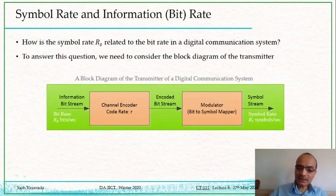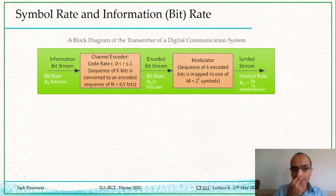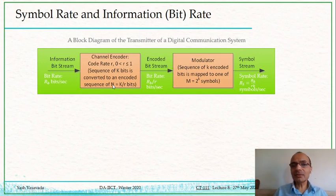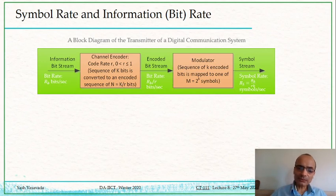With that in mind, let us see what happens. The channel encoder takes K bits and converts them into N encoded bits, where N is typically greater than K. How much greater is determined by the code rate r. If r is close to 1, N will be close to K; if the code rate is very small, N will be much bigger than K. Let us consider r = 0.5, meaning N = 2K.